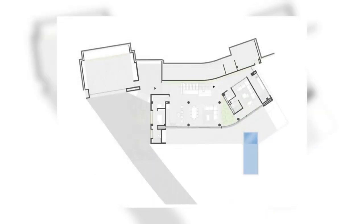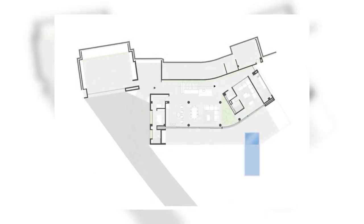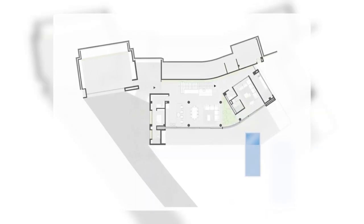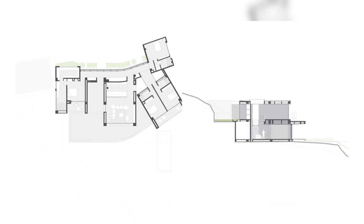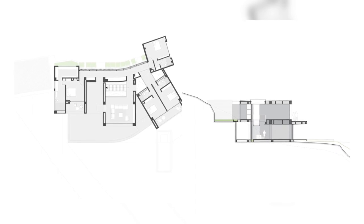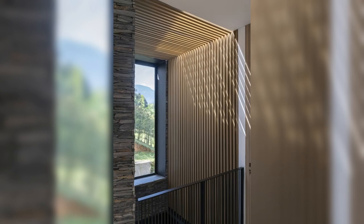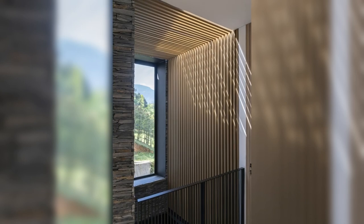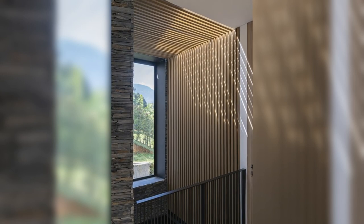Through the journey along the stairs, naturally illuminated with the filters and textures that come from a pergola located above them, the spaces on the upper level are discovered. These stairs lead to the central volume of the second level, a family room.